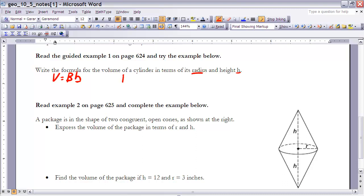Well, let's think about the base of the cylinder. The base of the cylinder is a circle. Therefore, the area of that base would have to be pi r squared.